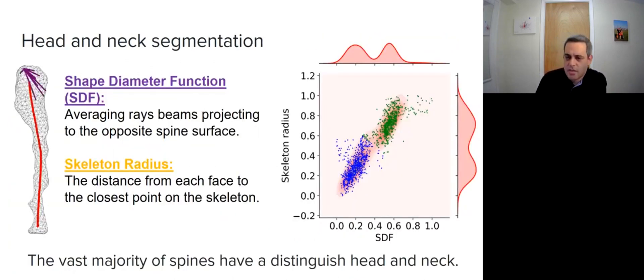After the three-dimensional reconstruction of the spine, we used a computer vision algorithm to separate the head and neck. In previous studies, measurements of the head and neck were done manually, usually on a two-dimensional projection image. Here, we used an automatic objective algorithm.